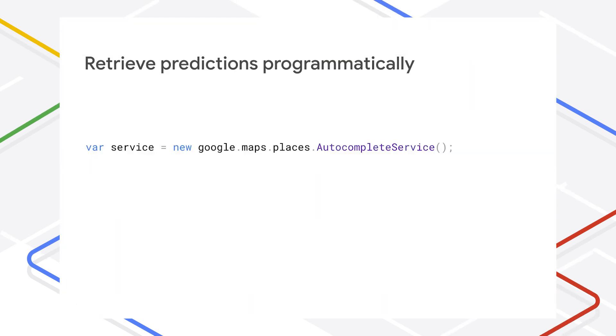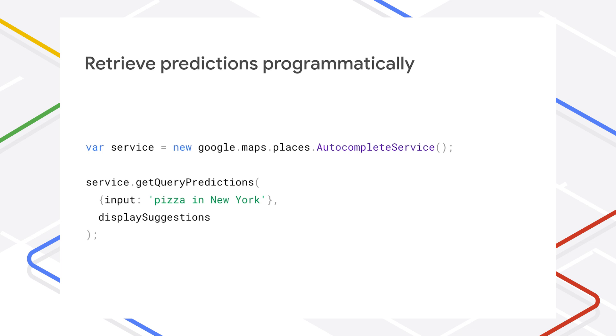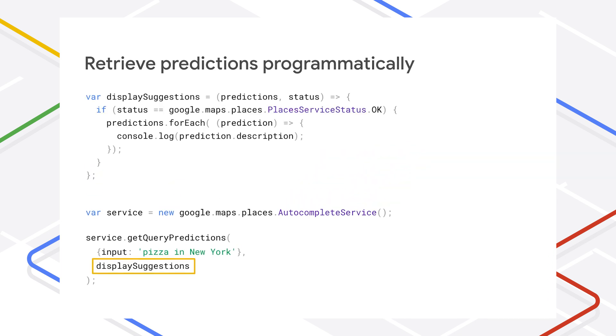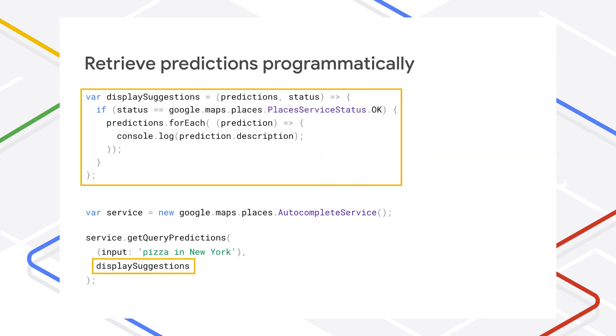I've shown you the simplest way to add place autocomplete to your web page, but you may want finer control over the experience. For the most control, if you just want the predictions without having Google provide any UI elements, you can use the autocomplete service to retrieve predictions programmatically. You can call either getPlacePredictions if you are only expecting actual places as user input, or getQueryPredictions if you're expecting text queries like pizza in New York.